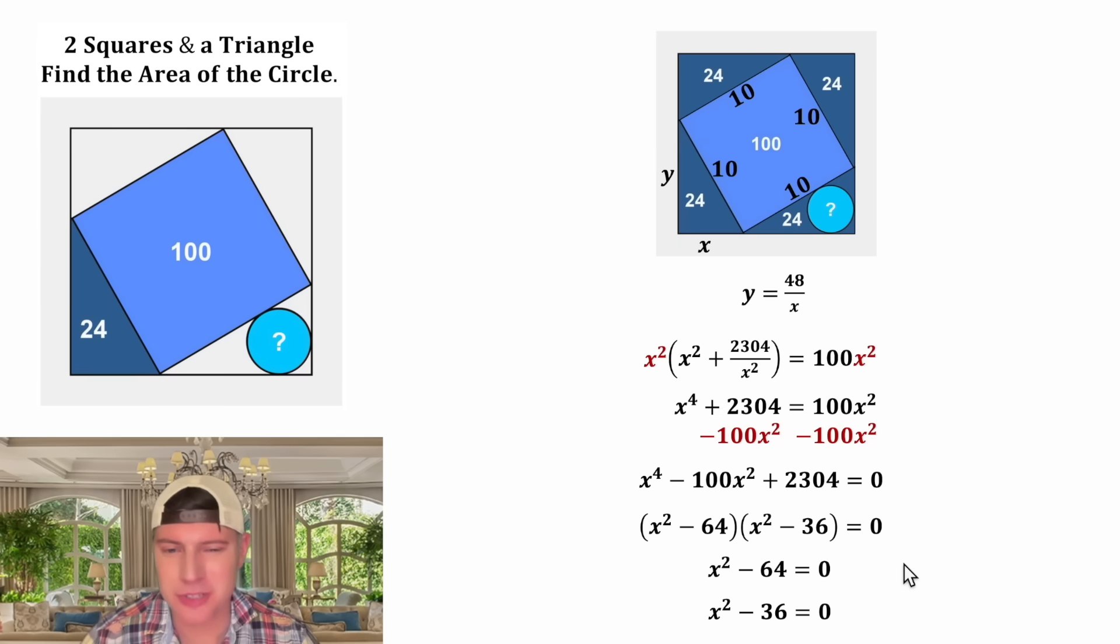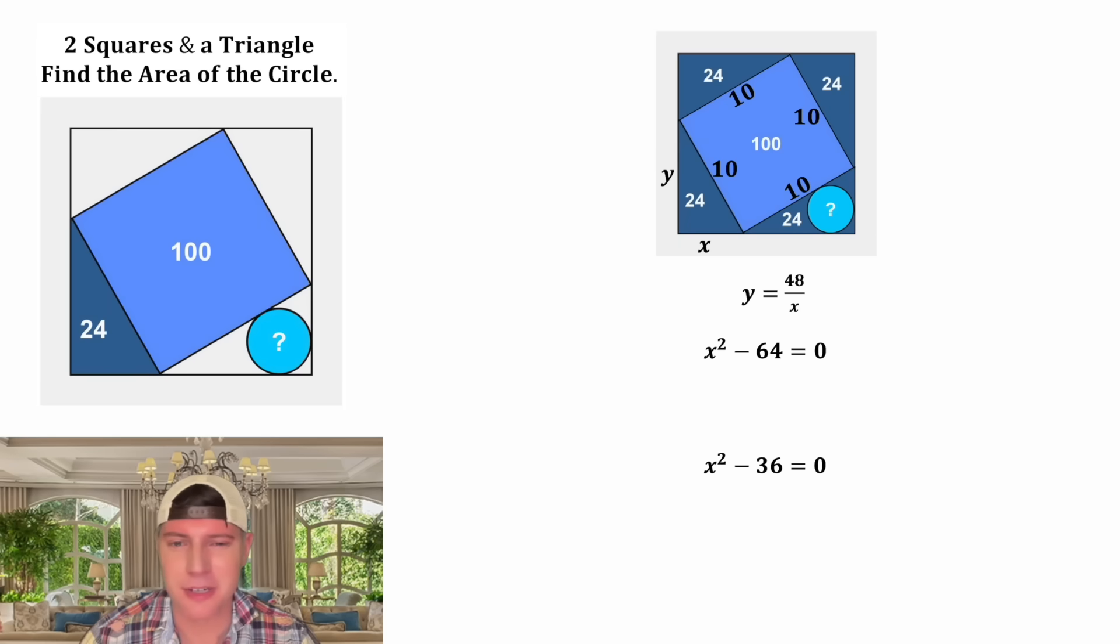Now I ran out of room so let's clean this up and bring these up here. To solve this we can add 64 to both sides, and for this one we can add 36 to both sides. We end up with x squared is equal to 64 or x squared is equal to 36. From here we can square root both sides of both equations and we end up with x equal to plus or minus 8 or x equal to plus or minus 6.